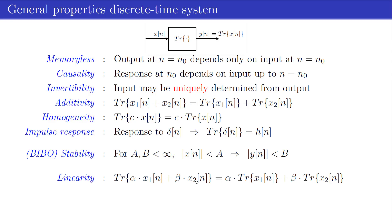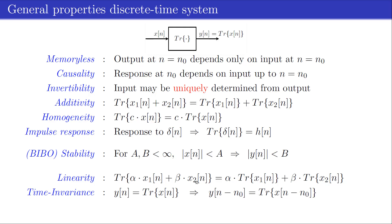A system that is both additive and homogeneous is said to be linear. If a system has the property that a shift or delay of the input by n0 samples results in a shift of the output by the same amount of n0 samples, the system is said to be time invariant. More formally, let yn be the response of a system to an arbitrary input signal xn. The system is said to be time invariant if, for any delay of n0 samples, the response to x(n−n0) is y(n−n0). In effect, a system is time invariant if its properties or characteristics do not change with time.